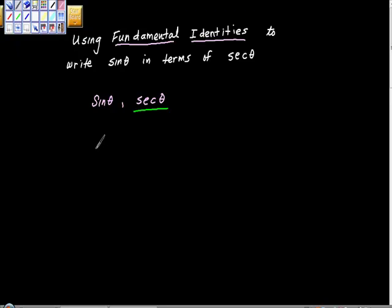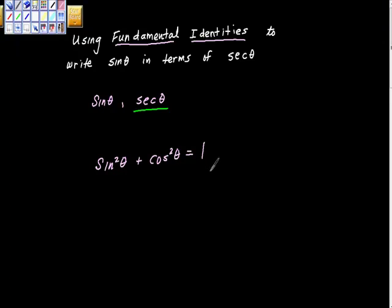Okay, I'm going to go ahead and start this problem. I think I'm going to start with the Pythagorean identity, and the Pythagorean identity I'm going to start with is this one, that sine squared theta plus cosine squared theta is equal to one.